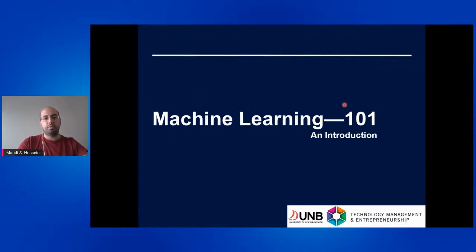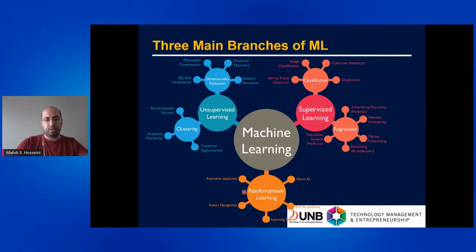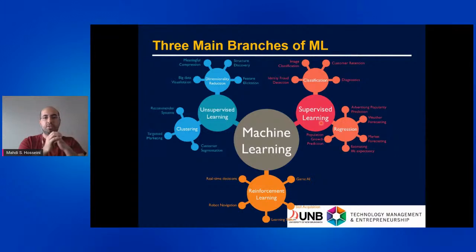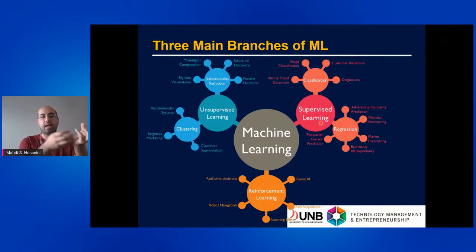Moving on to machine learning in the context of computer vision: there are three main branches — supervised learning, unsupervised learning, and reinforcement learning. Supervised learning refers to a pipeline where an expert provides knowledge on your data and you develop a system to replicate that knowledge. In medical imaging, a doctor tells you that based on certain images, this kind of diagnosis is made, and you want to replicate that process.